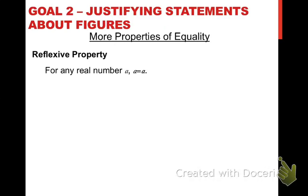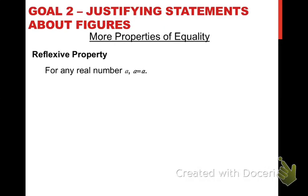The reflexive property can be looked at this way. If you're looking at the reflexive property of equality for real numbers, it means that for any real number a, that number is equal to itself. So seven equals seven, pi equals pi, negative two-thirds equals negative two-thirds. Now, each of the properties I'm going to go through, I'll show you what it looks like for real numbers, but I also want to show you what it looks like when distances and angle measures are involved, because that's what we'll be using more frequently in this course.